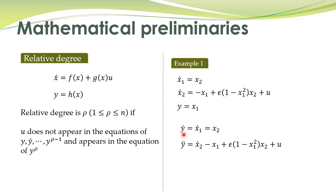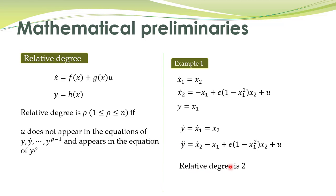Therefore we compute the second derivative of this output with respect to time. The second derivative of y is equal to x2-dot, which is equal to this expression, and you see that u is appearing in this equation. So u appears in the second derivative of y and it does not appear in the equation of y and y-dot. Therefore the relative degree of this system is equal to 2.